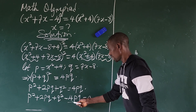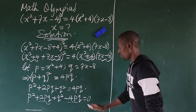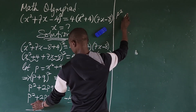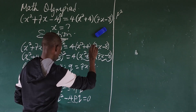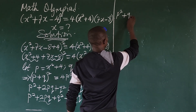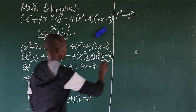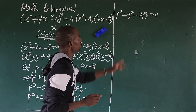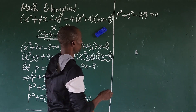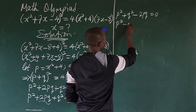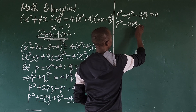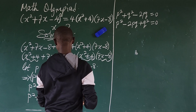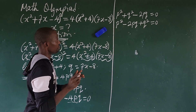We can combine the like terms: 2pq - 4pq gives us -2pq. So we now have p² - 2pq + q² = 0. We can rewrite this using a special algebraic identity.